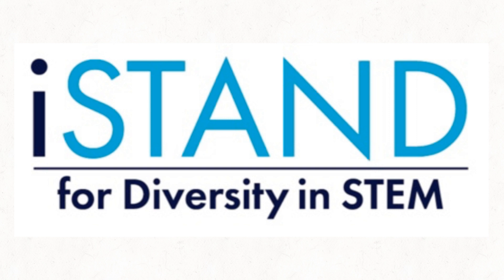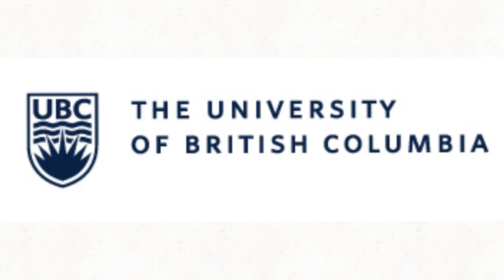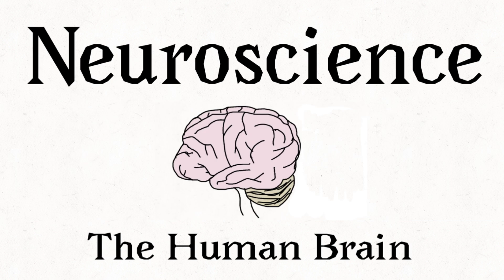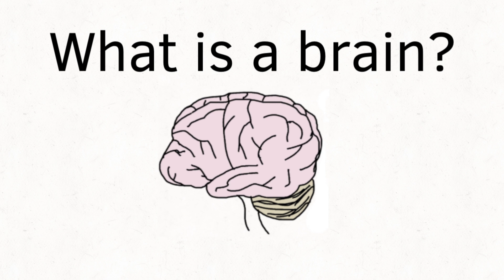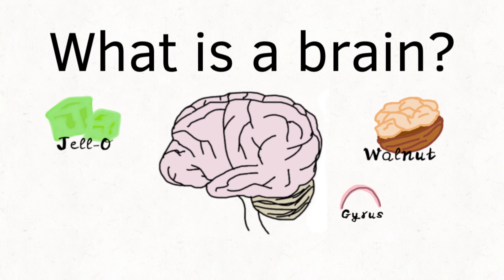iStand from the University of British Columbia Okanagan presents Neuroscience: The Human Brain. What is a brain? It has a consistency somewhat like Jell-O. It looks kind of like a walnut with bumps called gyri and grooves called sulci.